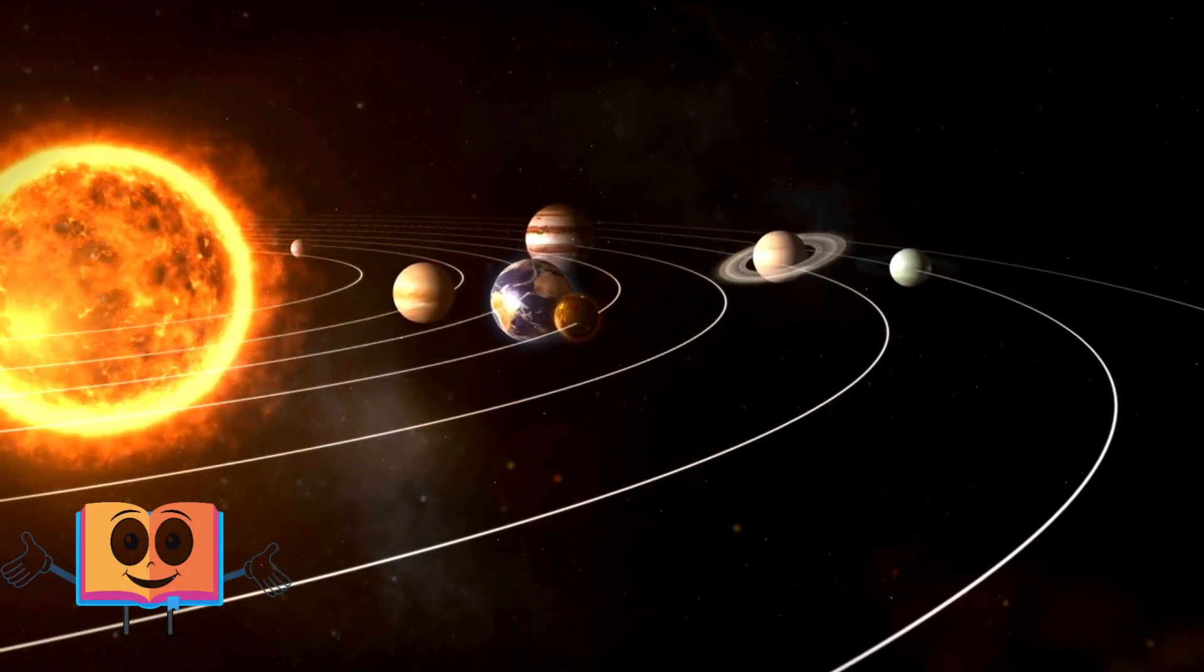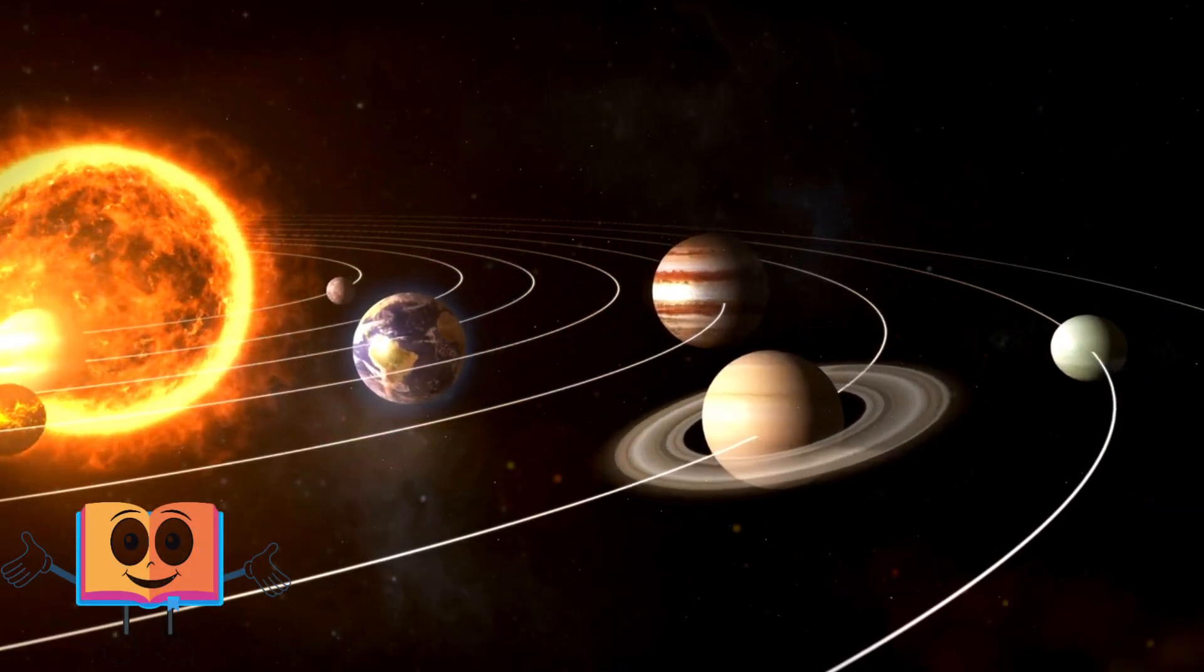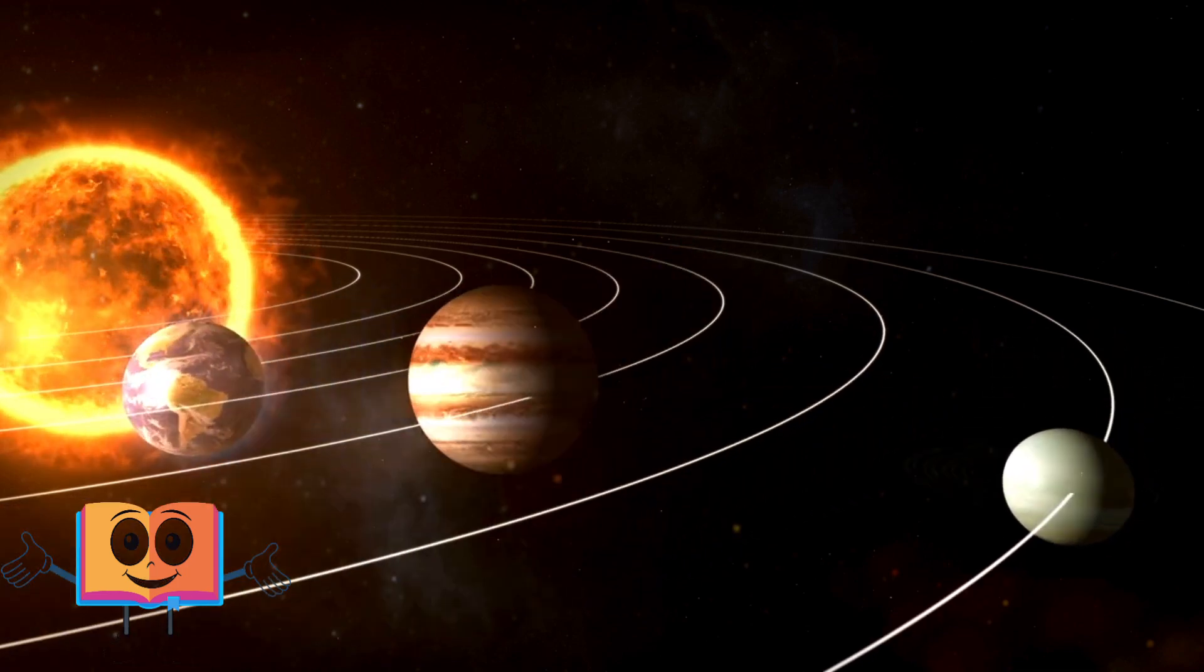Planets come in various sizes. Some, like Mercury, are small and rocky, while others, like Jupiter, are huge gas giants.